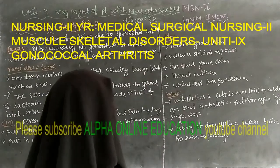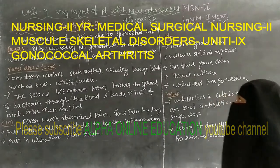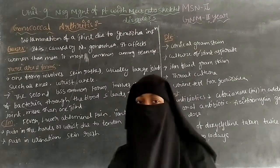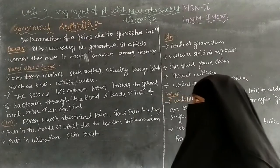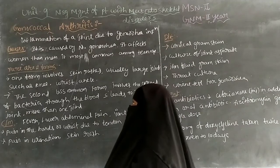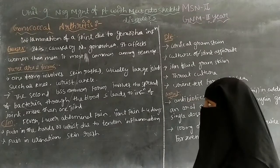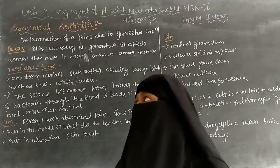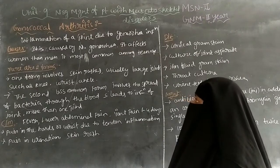Hi everyone. Today I am going to discuss MSN 2, Medical Surgical Nursing 2, for GNM second years. Unit 9 is nursing management of patients with musculoskeletal disorders. In the last class we covered septic arthritis, and today's topic is one of the abnormal conditions under musculoskeletal disorders — gonococcal arthritis.